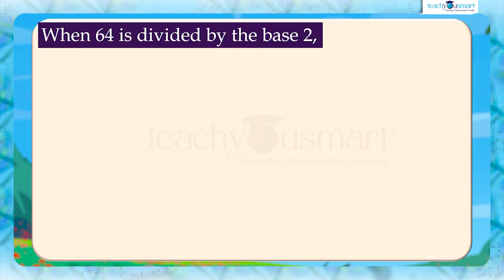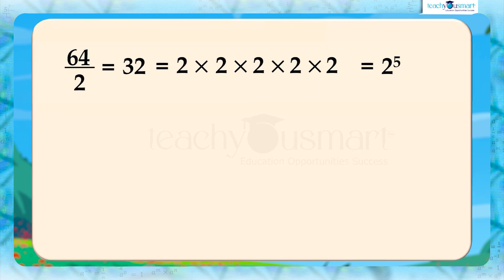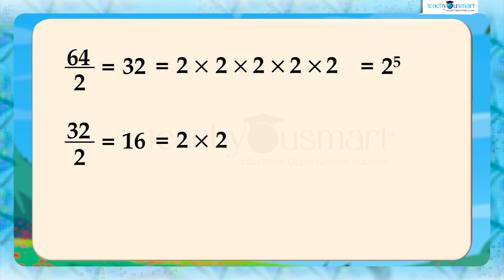When we divide 64 by the base 2, we get 64 by 2 equals 32, equals 2 multiplied by 2 multiplied by 2 multiplied by 2, equals 2 raised to 5. Again, 32 divided by the base 2: 32 by 2 equals 16, equals 2 multiplied by 2 multiplied by 2, equals 2 raised to 4.